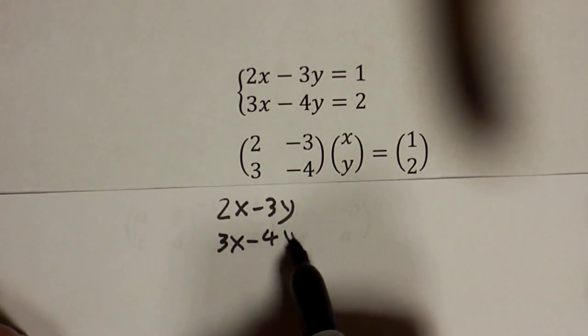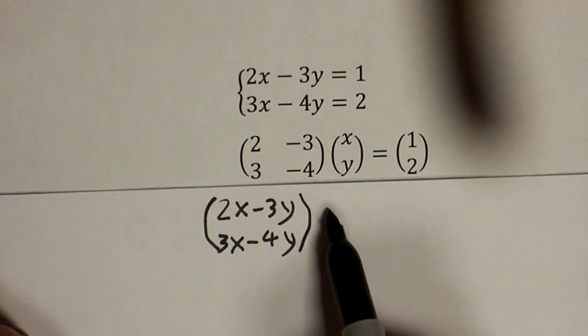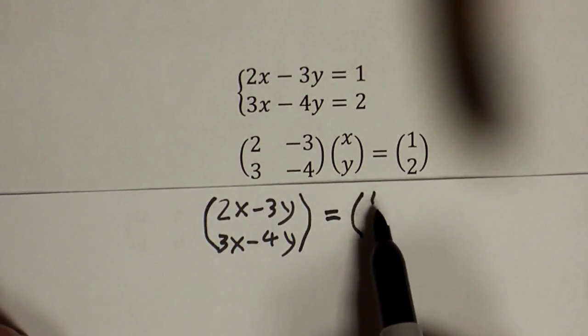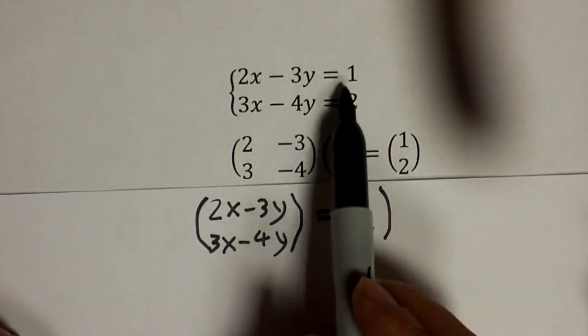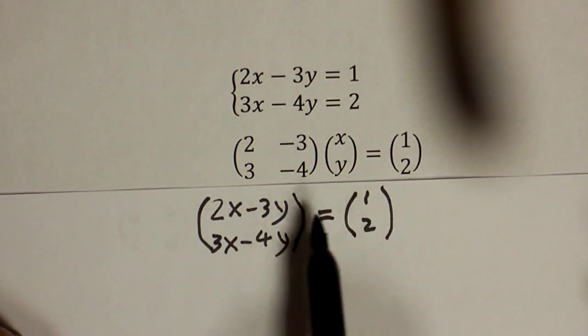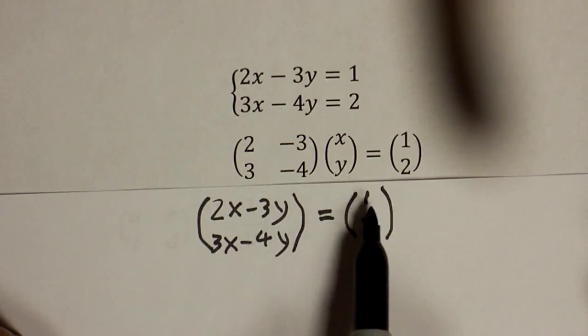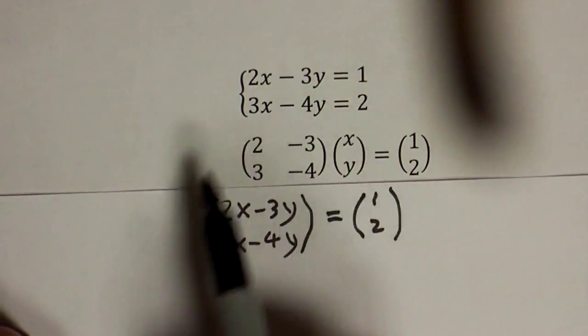That's the result of the calculation on the left side, and since that has to equal the right side, 1 and 2, you have exactly the same condition because for two matrices to agree, their corresponding elements must agree: 2x minus 3y has to be 1, 3x minus 4y equals 2, exactly as required.